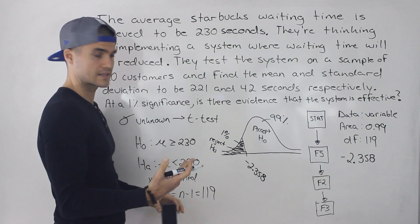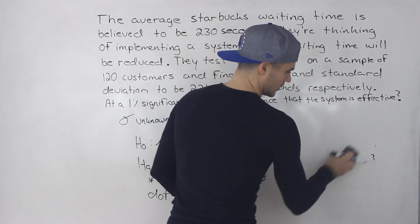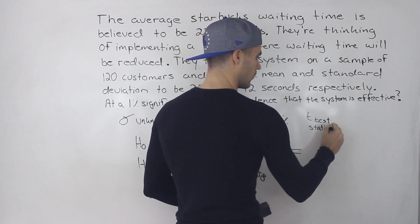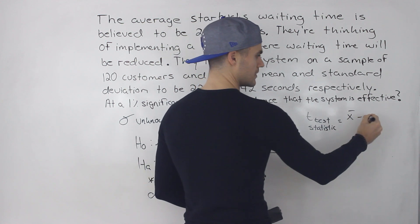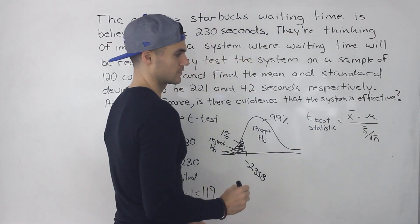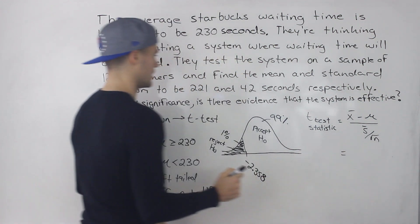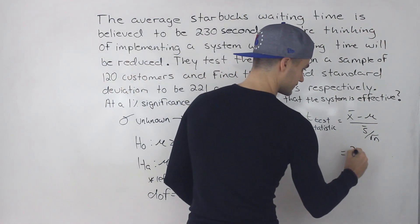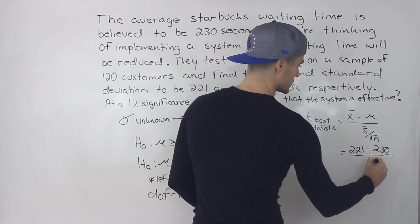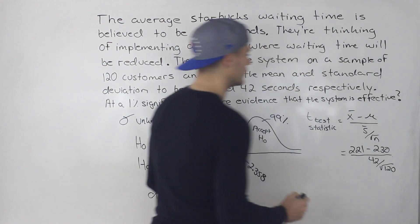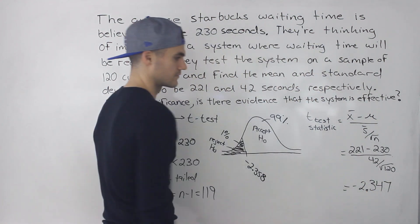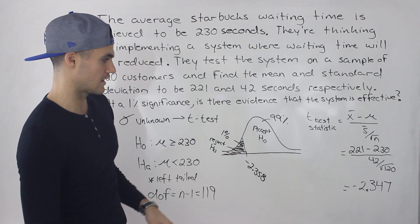Next step: find the test statistic. Because we're using a t-distribution, this is the t-test statistic. The general formula is: sample mean minus population mean, divided by the sample standard deviation over the square root of n. Plugging in: sample mean is 221, population mean is 230, sample standard deviation is 42, and n is 120. When you calculate that, you get negative 2.347. That is our test statistic.